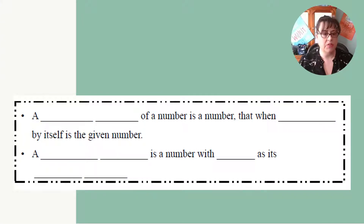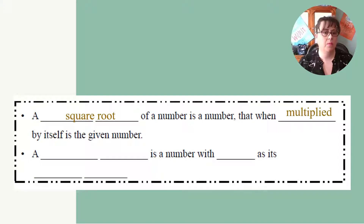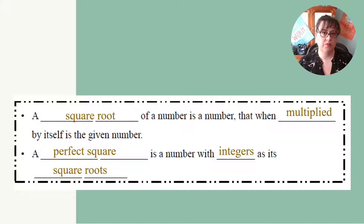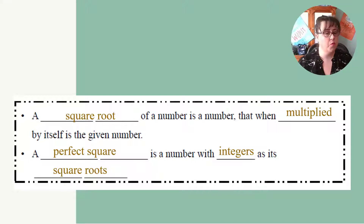A square root of a number is a number that when multiplied by itself gives the original number. A perfect square is a number with integers as its square roots. For example, if I was to take the square root of 16, the answer is 4, because 4 times 4 is 16.